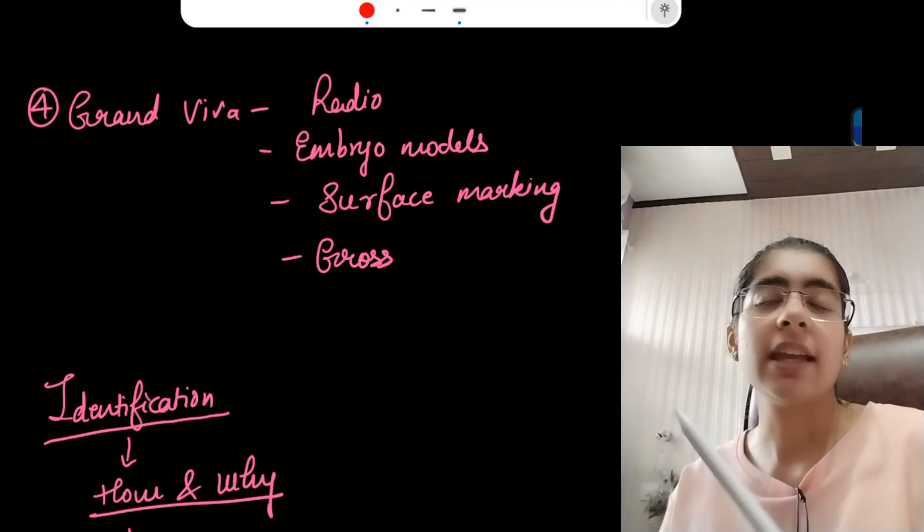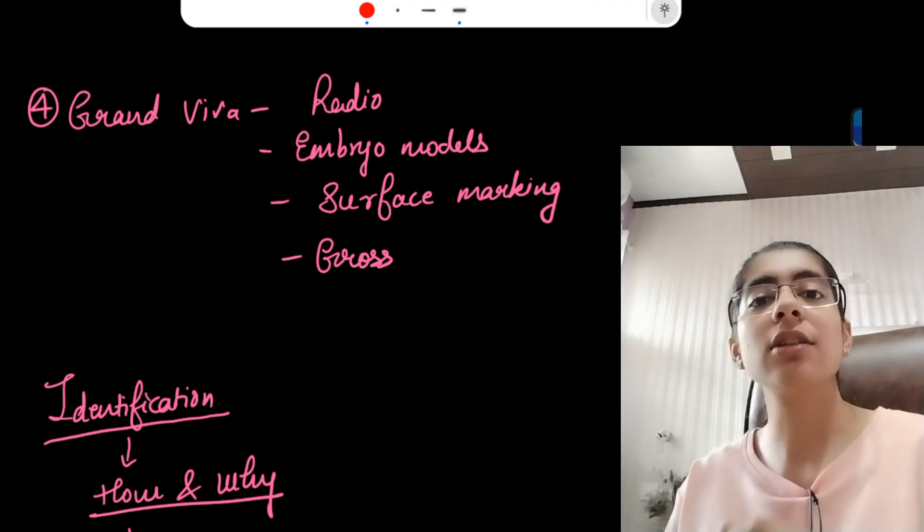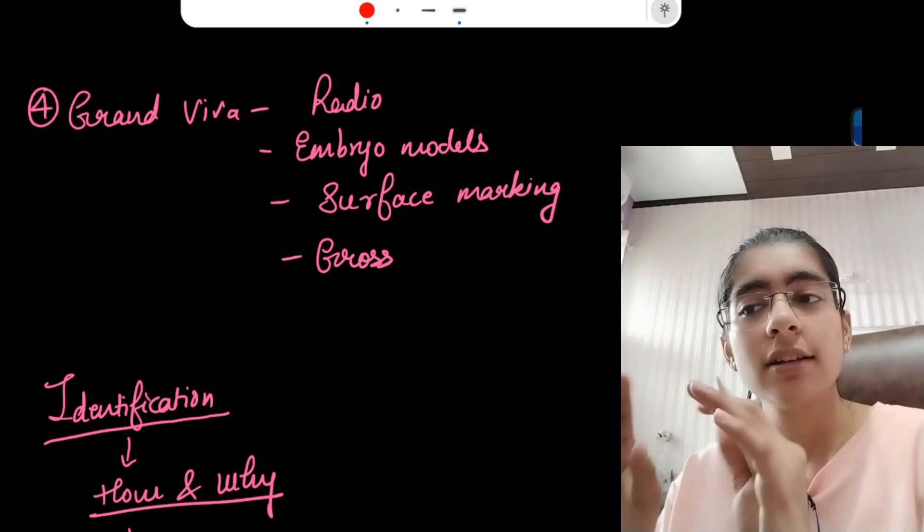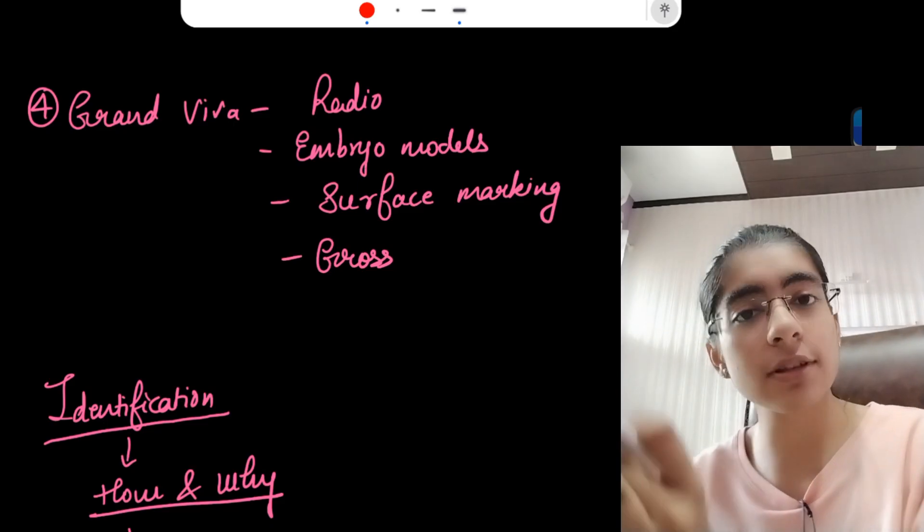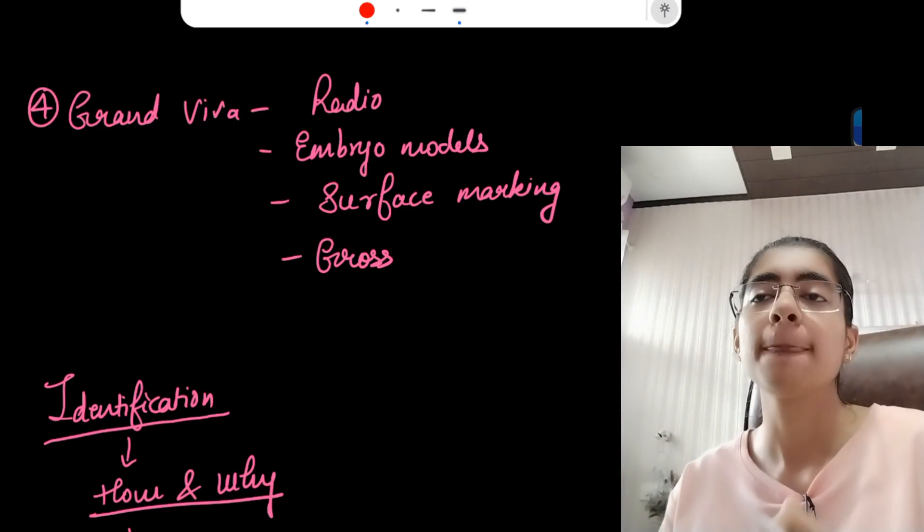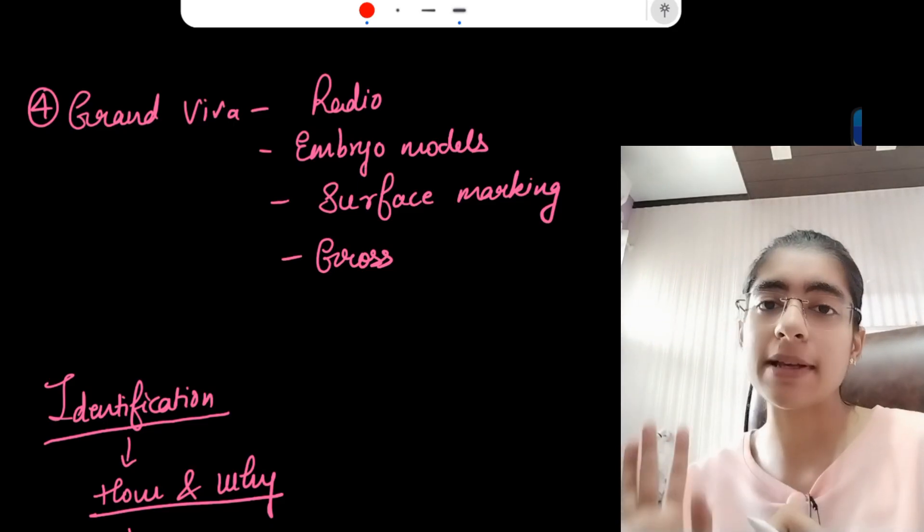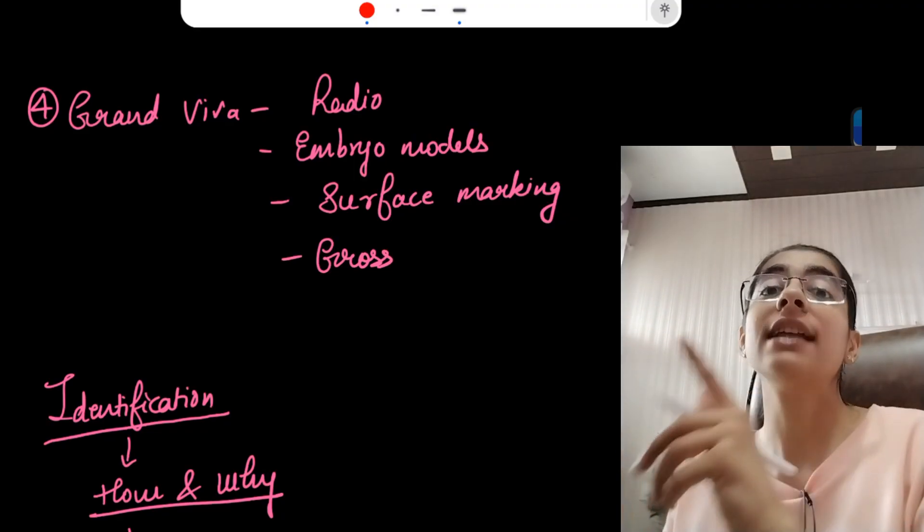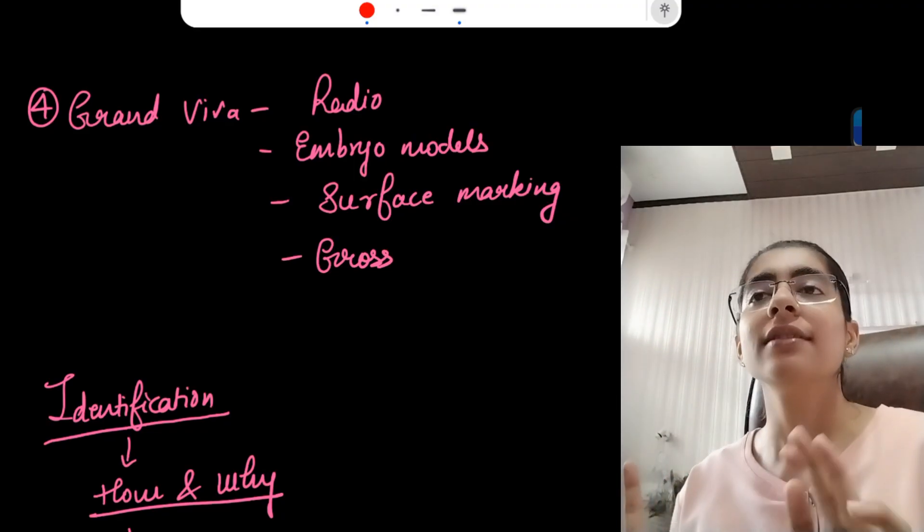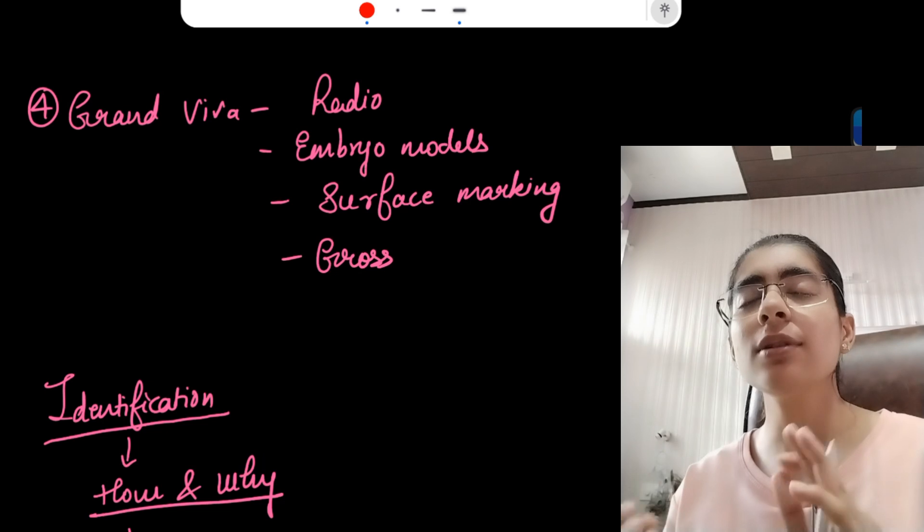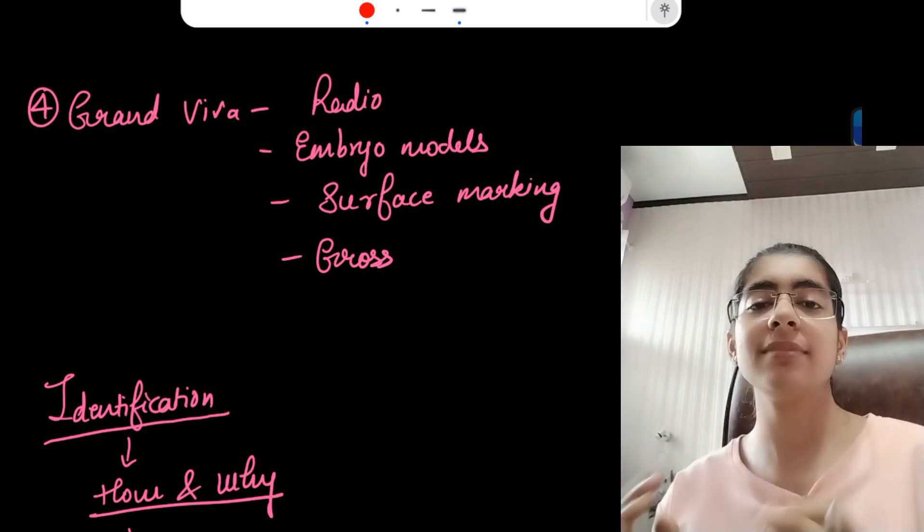Then comes the gross anatomy. In gross anatomy, again, some specimens are already well preserved and they are specific, they are special for your viva purpose. If you have seen those specimens beforehand and if you have done the dissection well throughout the year, then it can go well.